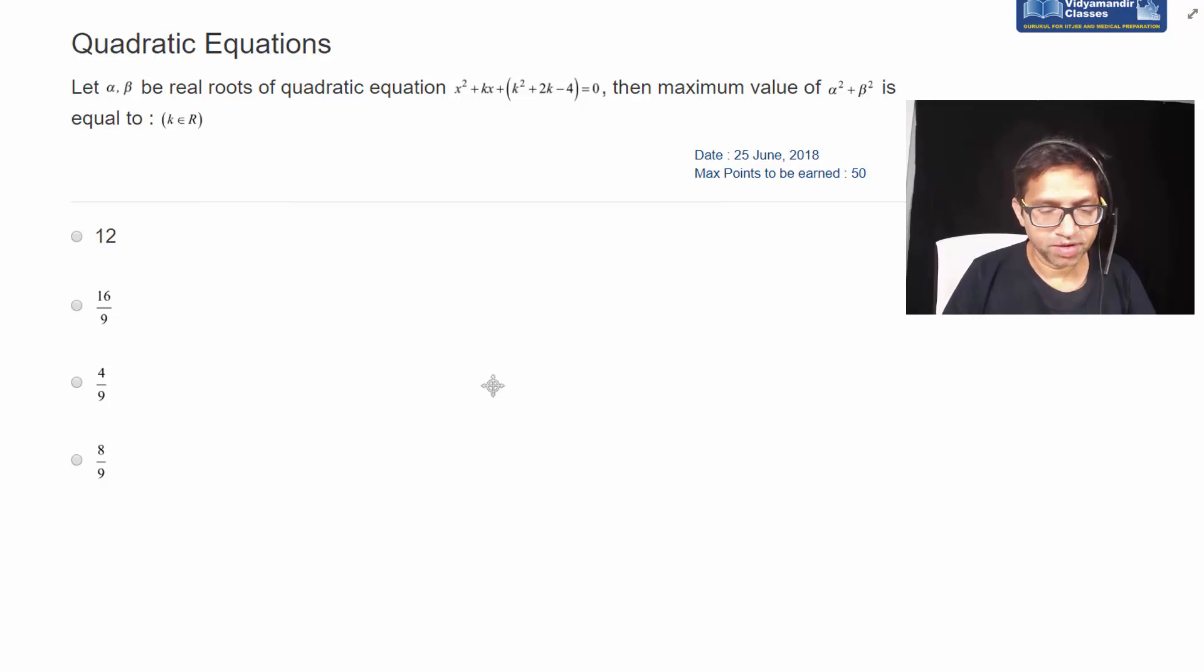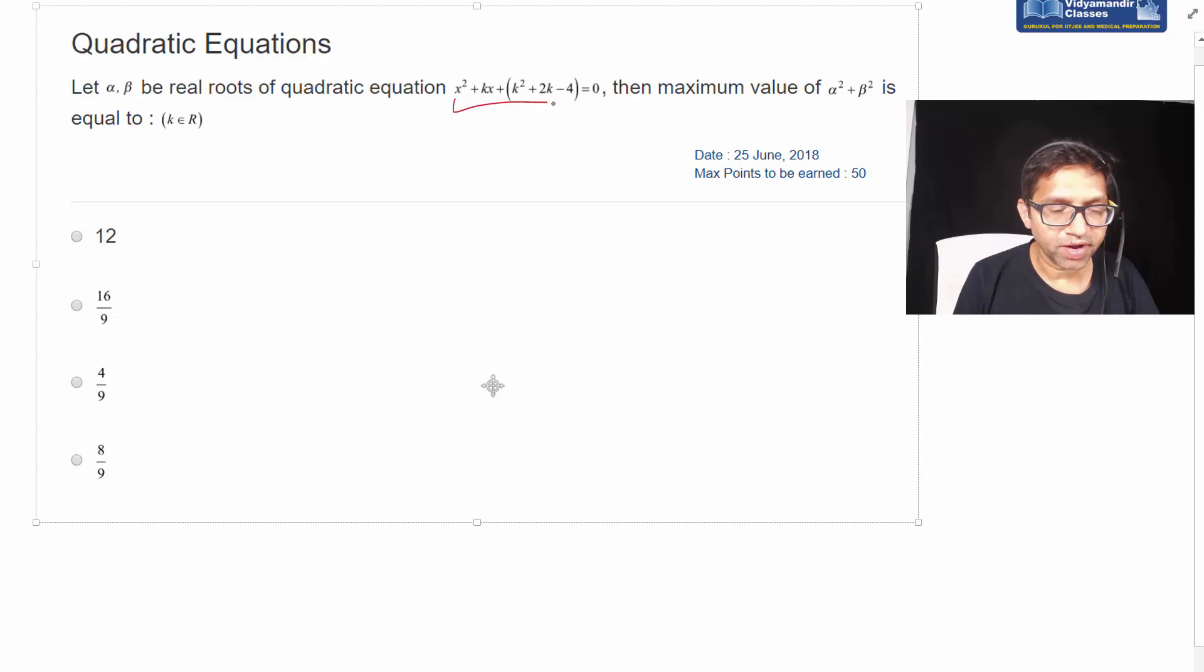Hi, this is a daily maths problem for 25th June and the question is based on quadratic equations. It's a very straightforward question. If alpha and beta are the roots of this quadratic, then we have to find the maximum value